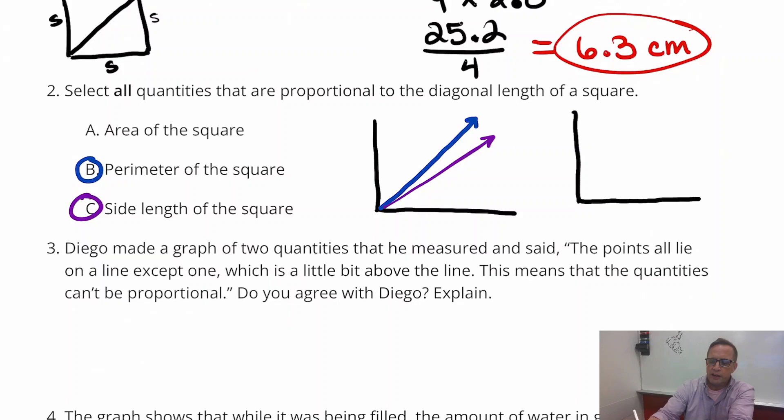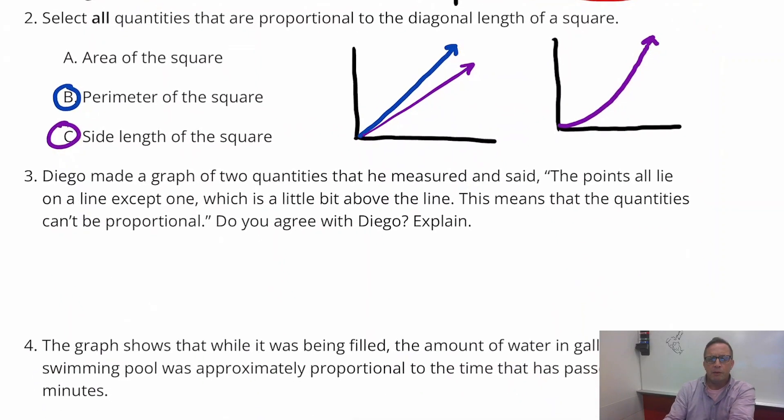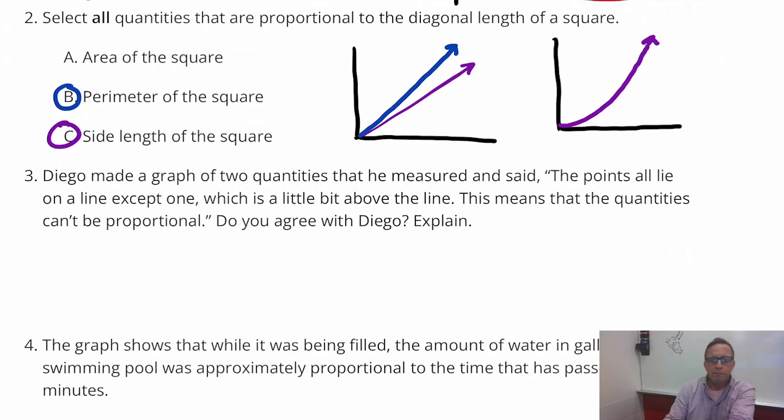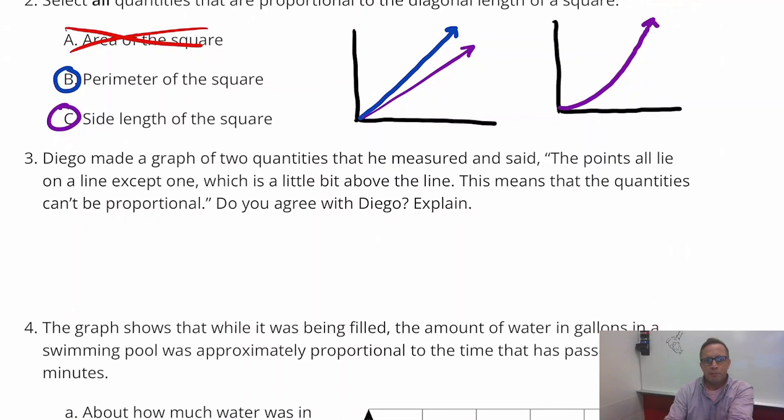That's going to look like, probably not doing this perfect, but that's going to look something like that. It's going to be non-linear. It's going to have this upward progression. Of course, if you can graph it, it's going to be a function, but it's definitely not proportional. So we can cross that one out. Area of the square is the only one of those three that is not proportional.